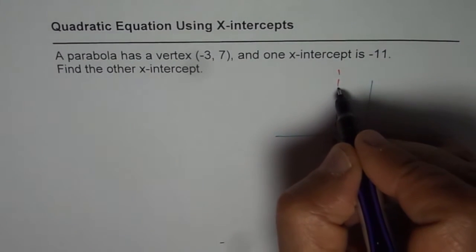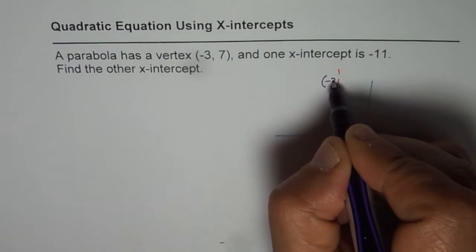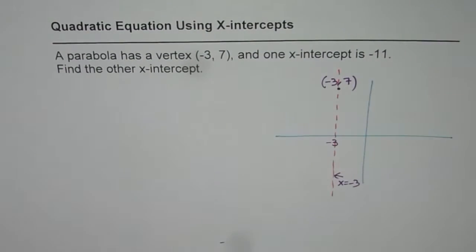Somewhere on this where y value is 7, we have the vertex for the parabola. So the point is (-3, 7). This is the point given to us.